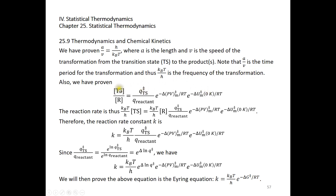We also have the equation for the concentration of the transition state over the concentration of the reactant at equilibrium: it is the ratio of the partition functions, times e to the power of negative delta PV sub M over RT, times e to the power of negative delta U sub M over RT. The reaction rate equals the concentration of the transition state multiplied by the frequency of transformation k_B T over h. Substituting, the reaction rate is k_B T over h times the reactant concentration times the partition function ratio of transition state to reactant, times the exponential PV and internal energy terms.